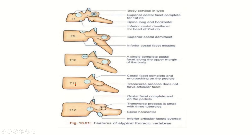T2 through T8 are typical thoracic vertebrae. In T11 and T12, the transverse process has no costal facet, and correspondingly the 11th rib has no tubercle. The transverse process of T12 is not like a typical thoracic transverse process — it has three processes or three tubercles.